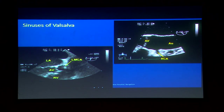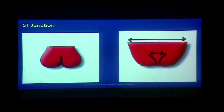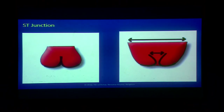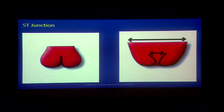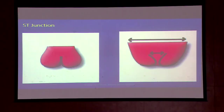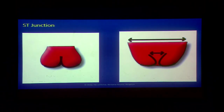Three sinuses of Valsalva: the non-coronary cusp, left coronary cusp, and right coronary cusp — each of the icons is shown here. The aortic valve cusps insert from the aortic annulus to the sinotubular junction. Dilation of the ST junction will cause displacement away from the center, thus loss of coaptation and hence aortic regurgitation.